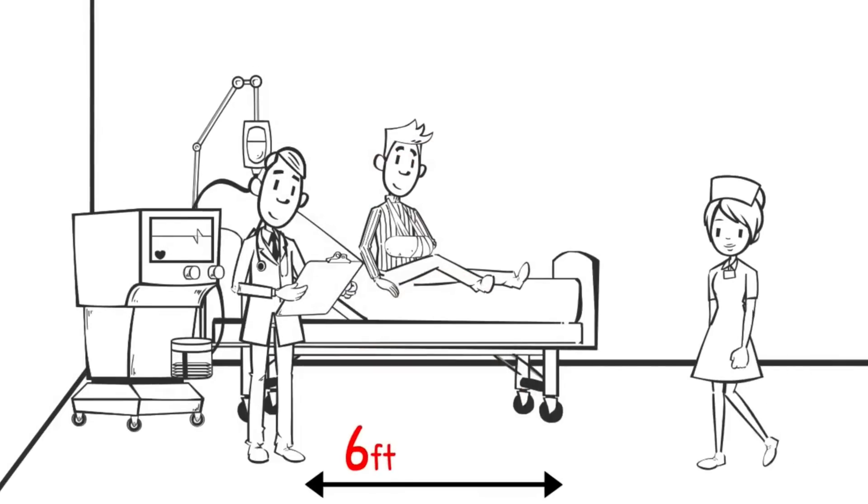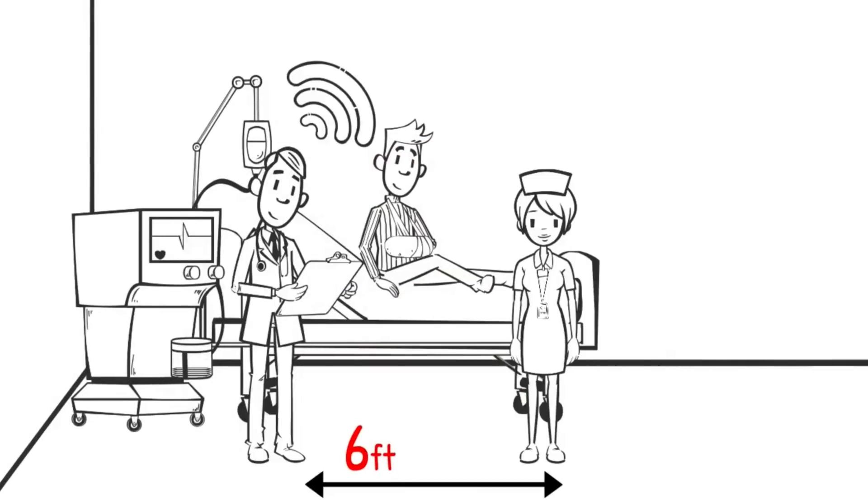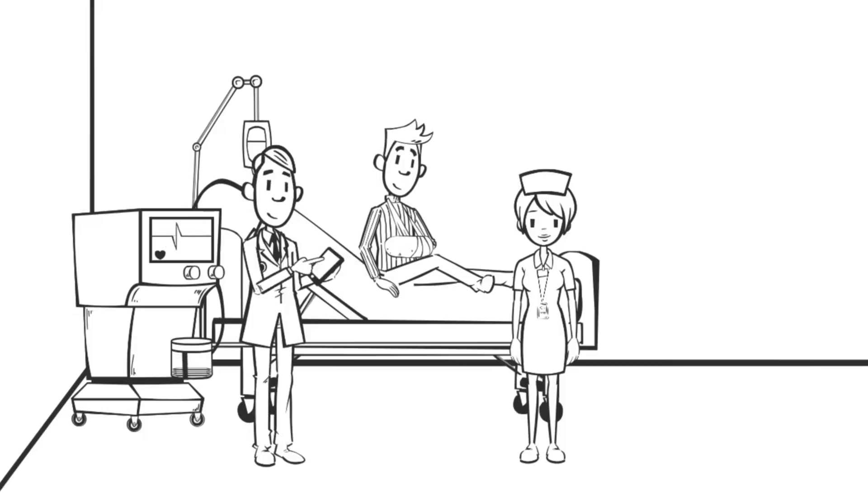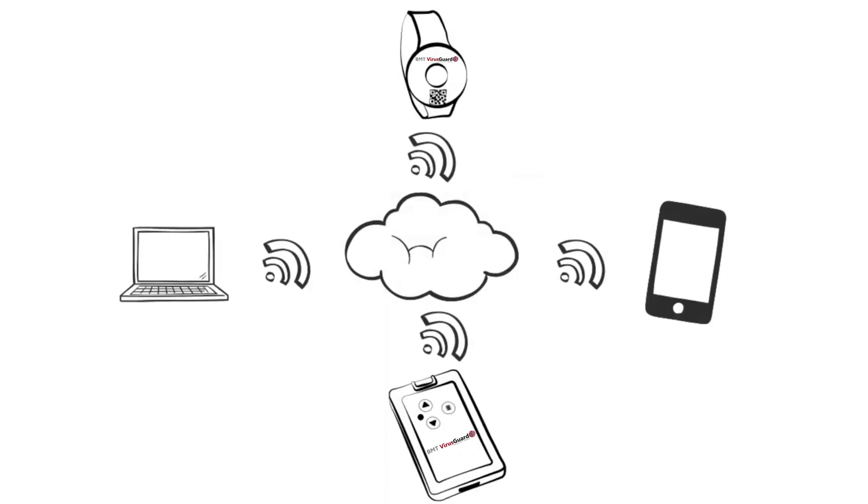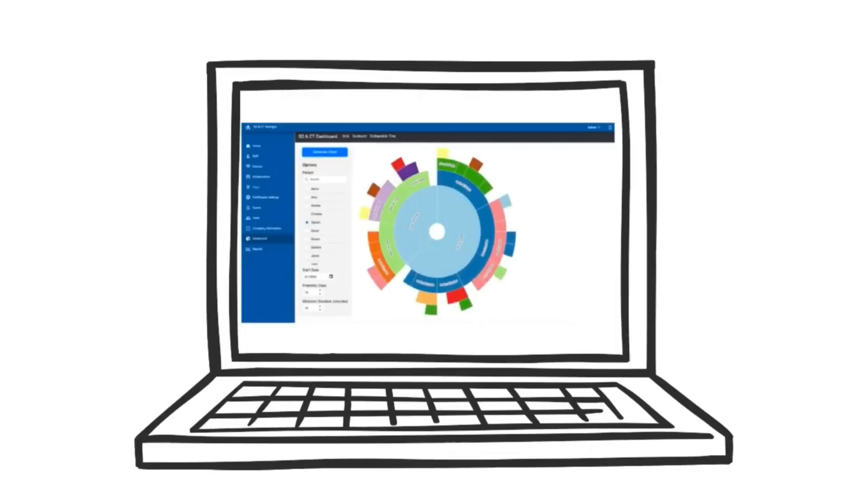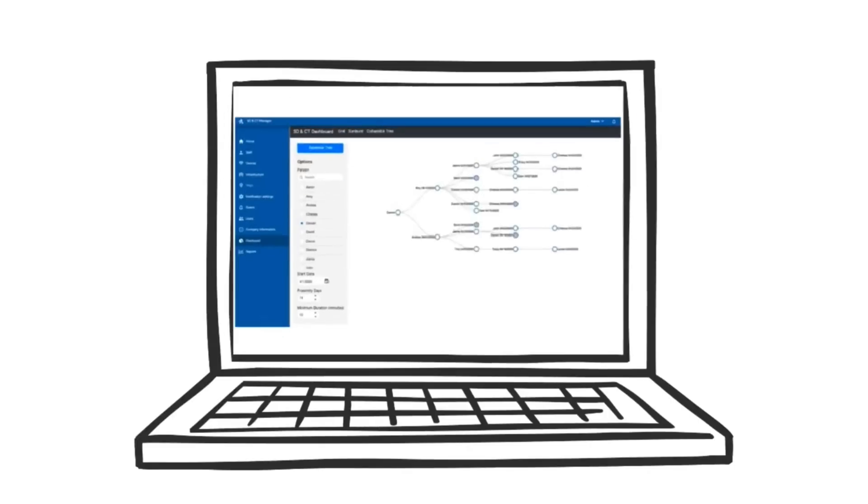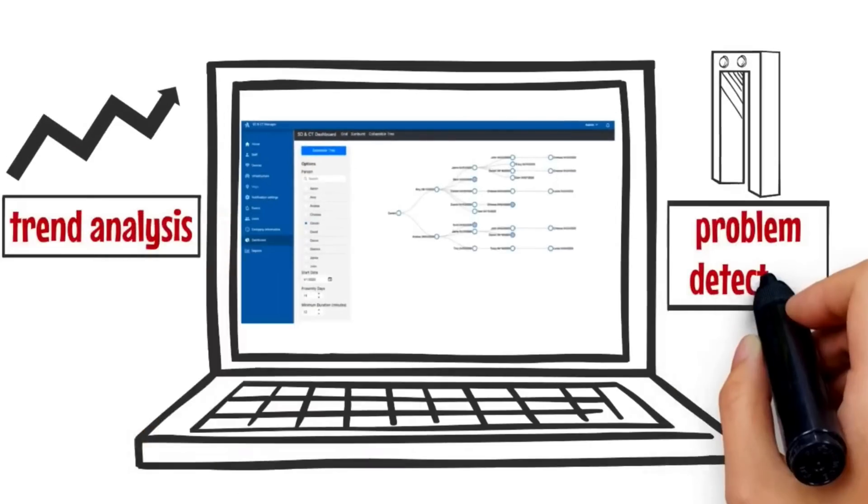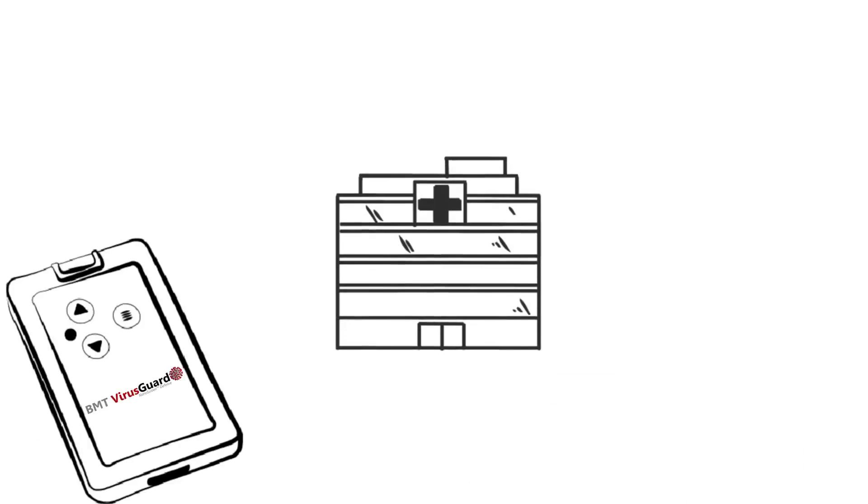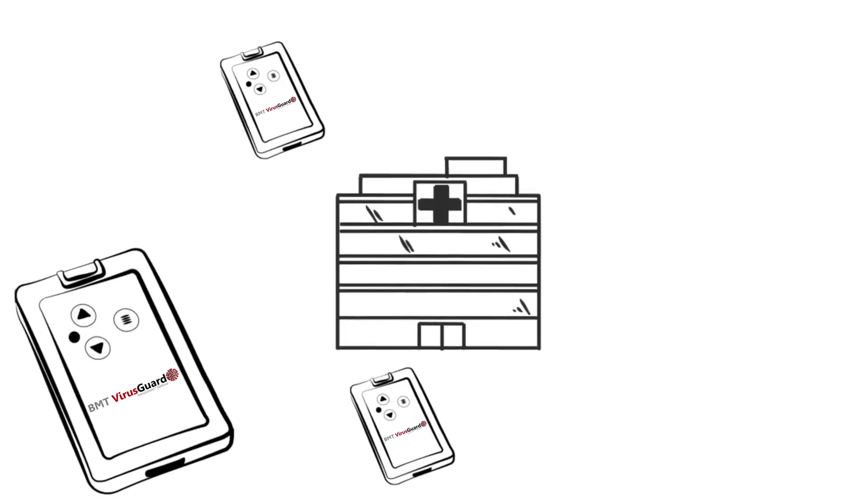The BMT VirusGuard cloud-based software platform can be deployed quickly to record employees' contacts, provide contact tracing, and generate reports for trend analysis and problem detection. Tags communicate with the software platform using existing wireless infrastructure, employees' smartphones and tablets, or small gateways provided by BMT VirusGuard.